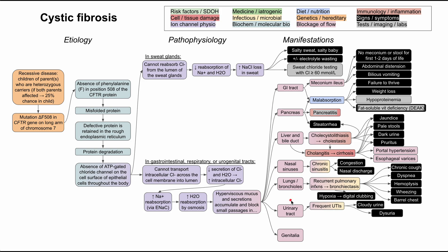The next organ system affected is the urinary tract. Thick secretions in the urinary tract can cause frequent UTIs presenting as cloudy urine, pain with urination, and dysuria. You can also have kidney stones develop — similar to gallbladder stones forming when the biliary tract backs up, kidney stones form when the renal tract gets backed up. Kidney stones can precipitate more UTIs and also cause flank pain and hematuria.